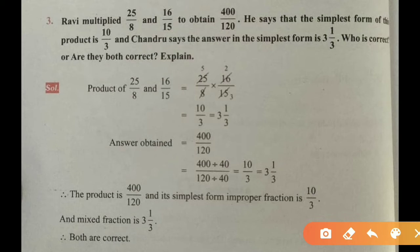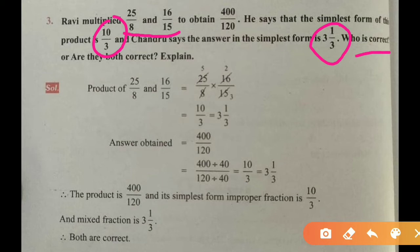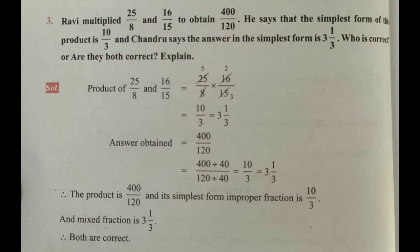The third question: Ravi multiplied 25 by 8 and 16 by 15 to obtain 400 divided by 120. He says the simplest form of the product is 10 by 3. Chandru says the answer in simplest form is 3 and 1 by 3. Whose answer is correct, or are they both correct? So Ravi takes two numbers 25 by 8 and 16 by 15, and Chandru says it is 3 and 1 by 3.